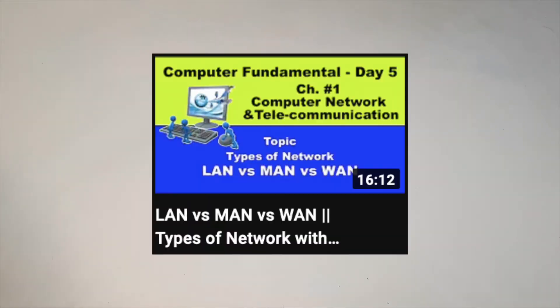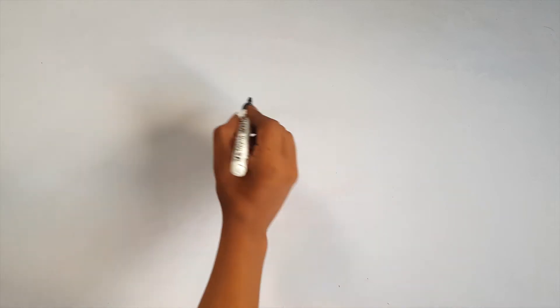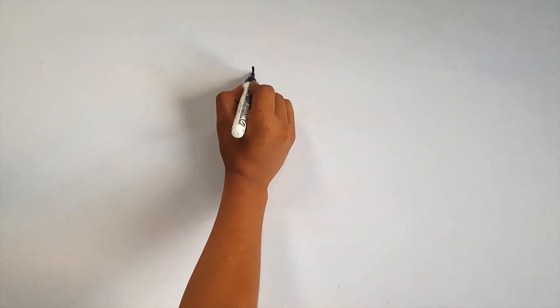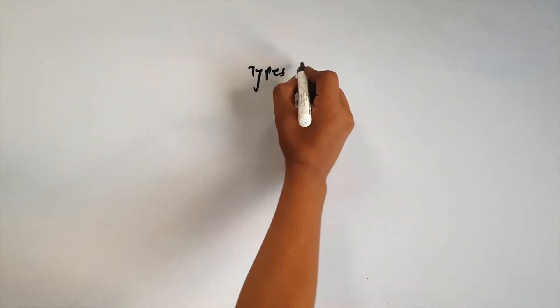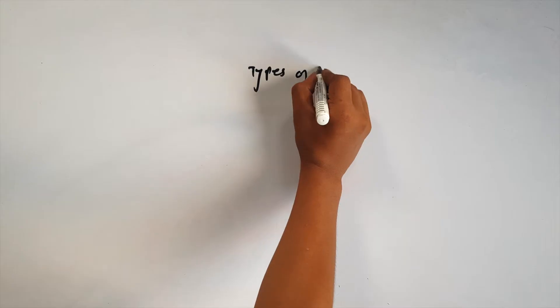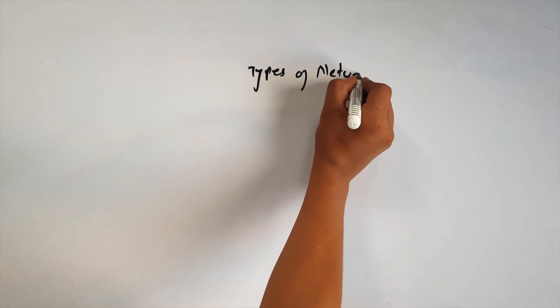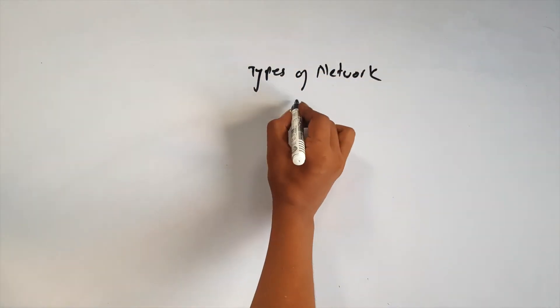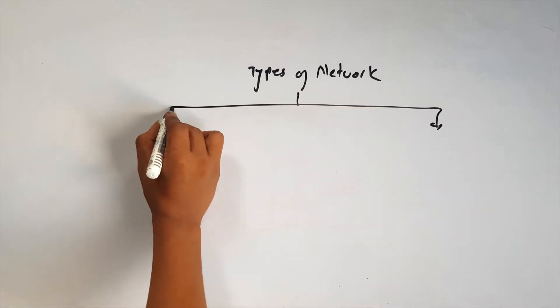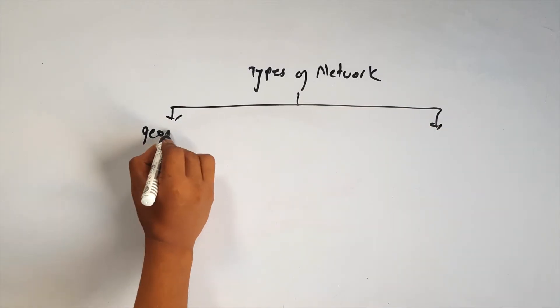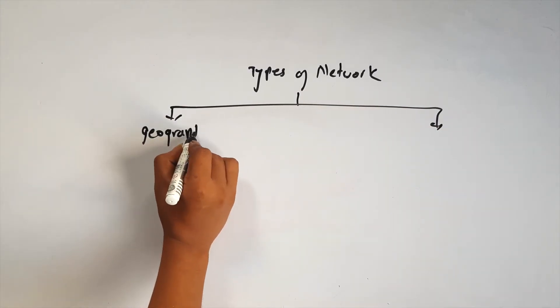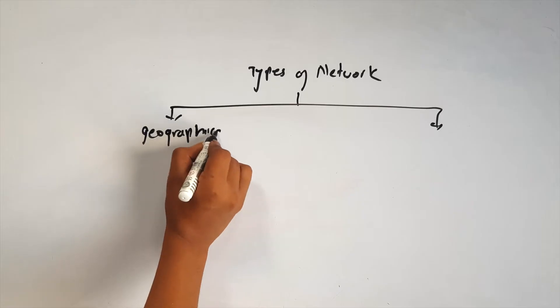Welcome back to another video of Computer Fundamentals. In the last video, we covered the differences between LAN, MAN, and WAN. In this video, we will talk about network architecture. In the last video, we talked about types of computer networks on the basis of geographical location and geographical coverage.